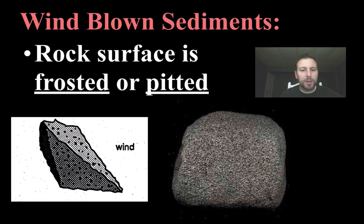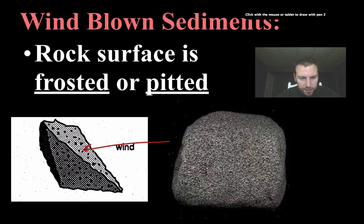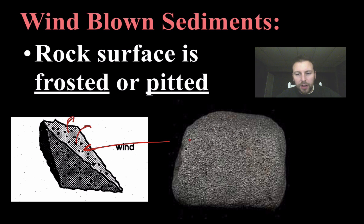Wind-blown sediments cause surfaces to become pitted, or what's called frosted. Small sediments come in, hit the surface, and basically pluck out little pieces — this process is known as pitting. We can actually see it here in this picture, though it's a little bit hard to see.